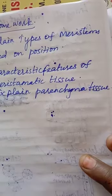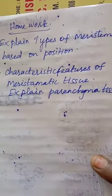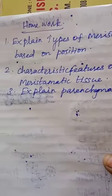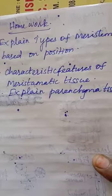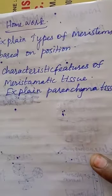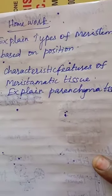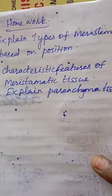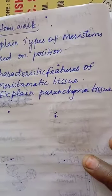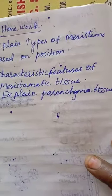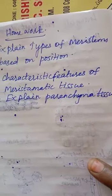Then the third question: explain parenchyma tissue. It is on page number 211. Under the parenchyma heading, write everything given there. Also draw the parenchyma and chlorenchyma diagrams — just two or three layers, that is enough to draw.